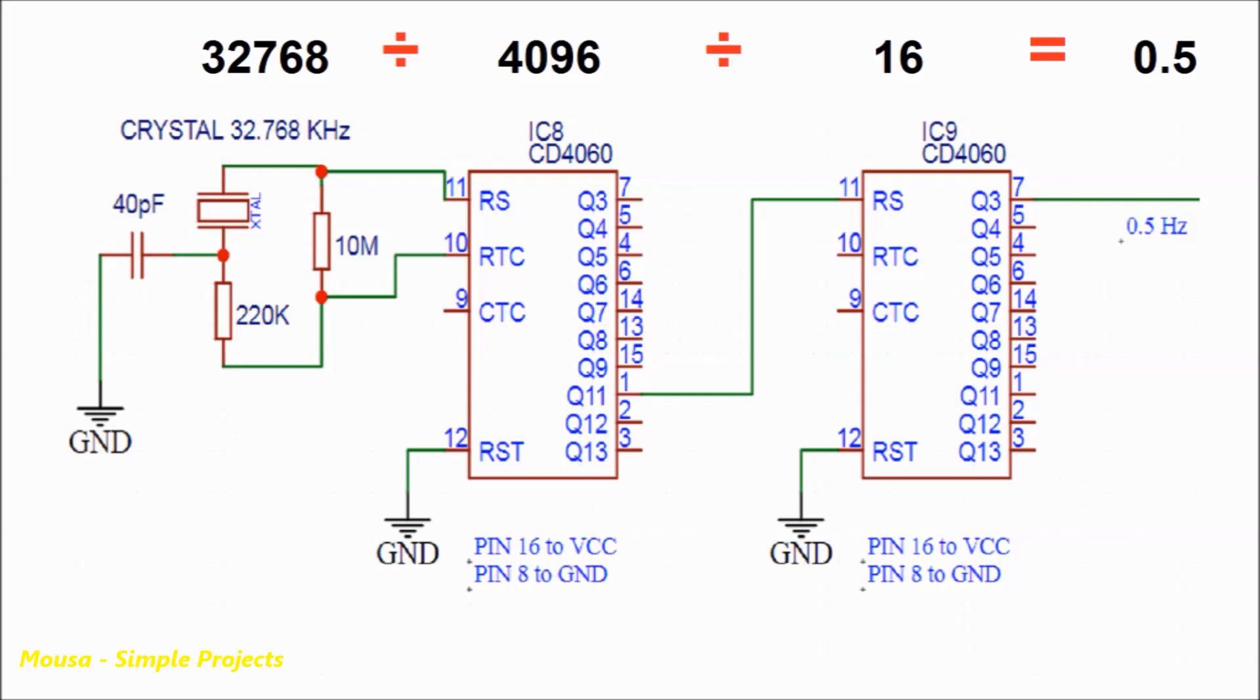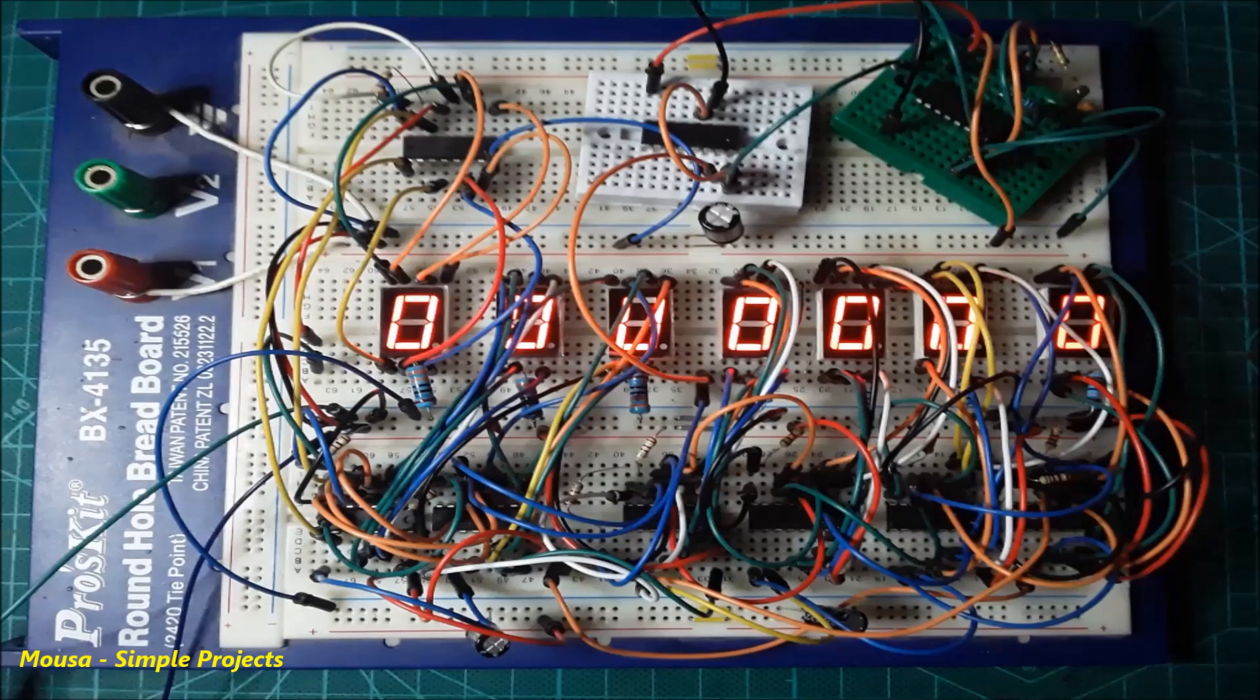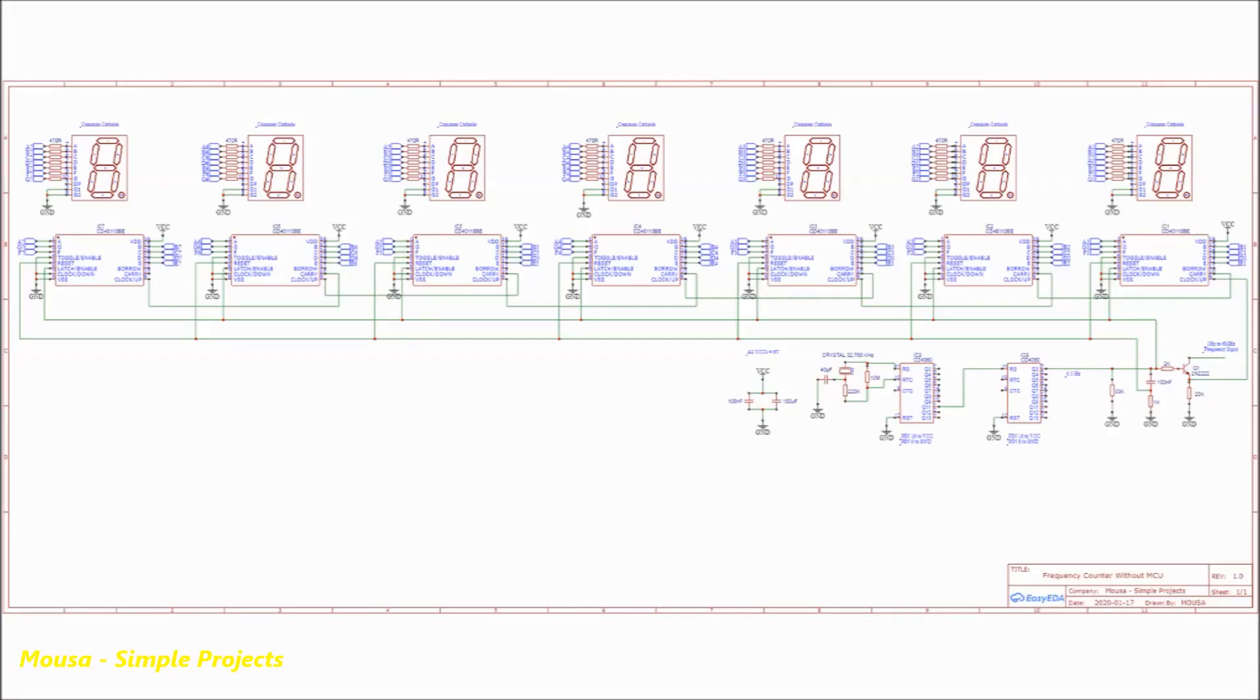To increase the number of digits, we have to connect several ICs together as shown here. But you have to connect pin number ten of each IC to pin number nine of the next IC.